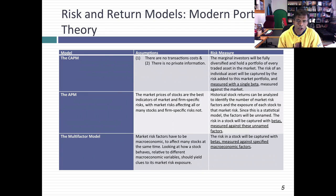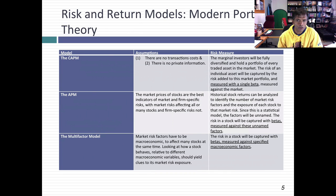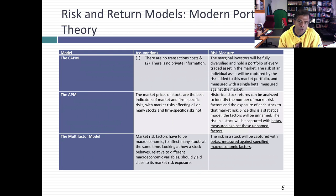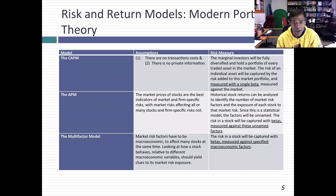The first assumption is there are no transactions costs, and the second is there's no private information. In that world, diversification will be carried to its logical limit and investors will be diversified into a portfolio that includes every traded asset in the market. The risk of a stock then becomes the risk added to this market portfolio, and that risk is captured with a single beta. The CAPM was the first model to connect risk to expected returns in modern portfolio theory, and in 1964 when it came out, it was viewed as a godsend.